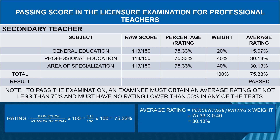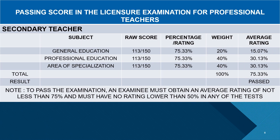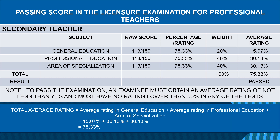Applying the same process for professional education and area of specialization: 75.33% times 0.40 gives 30.13% for each of those two subject areas. Adding the average ratings in all subject areas — 15.07% plus 30.13% plus 30.13% — we get a total of 75.33%. According to the Professional Regulatory Board for Professional Teachers, an examinee must obtain an average rating of not less than 75% and must have no rating lower than 50% in any of the tests. Therefore, with a raw score of 113 in all subject areas, the examinee obtains an average rating of 75.33% and passes the licensure examination for professional teachers.